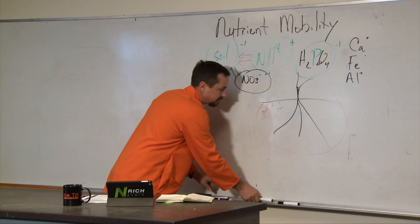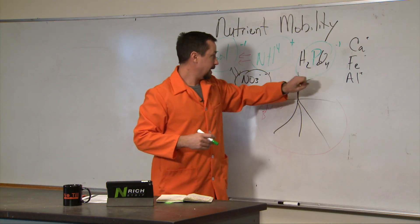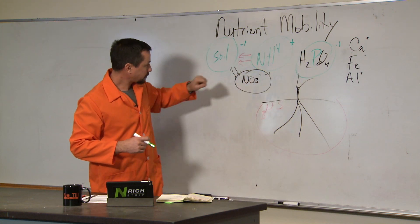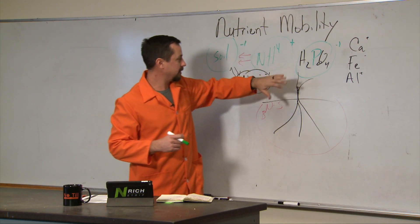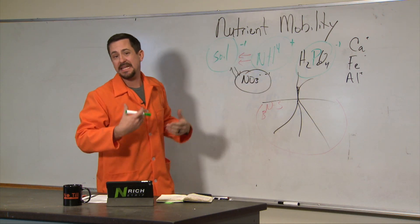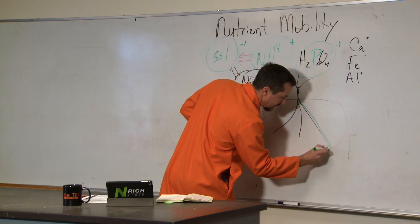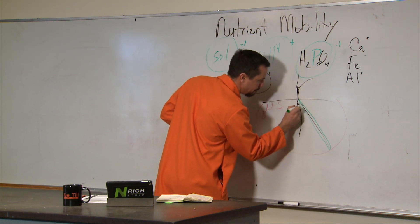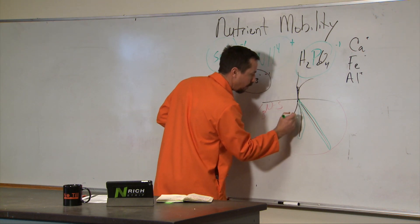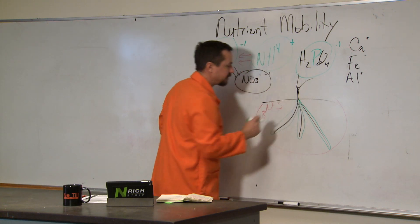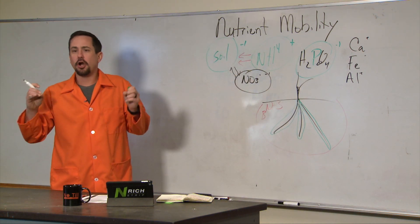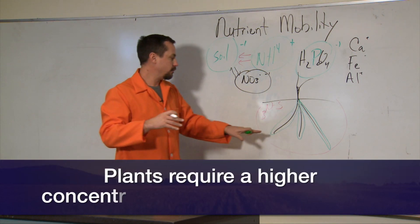Now on our immobile nutrients, that would be like phosphorus, ammonium even, but we're going to focus on phosphorus, iron, manganese, and zinc—many of our metals. We're drawing from an area that is really just millimeters away from the root surface. And so that means we need a concentration of that nutrient in the soil.